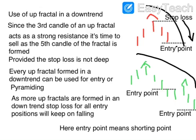Every up fractal formed in a downtrend can be used for entry or pyramiding. If you get another up fractal, you can add a second short position. As shown on the chart, when the first fractal is formed you go short, and when the second fractal is formed you can do another short, pyramiding your short positions. As more fractals are formed in a downtrend, the stop loss for all entry positions keeps falling — after the first fractal the stop loss is the high of its third candle, and after the second fractal the stop loss shifts to the high of the second fractal's third candle.